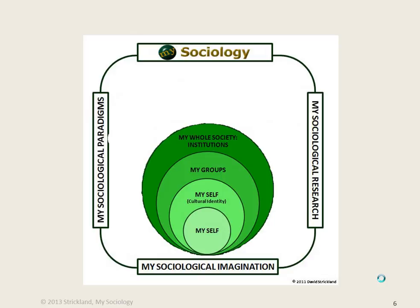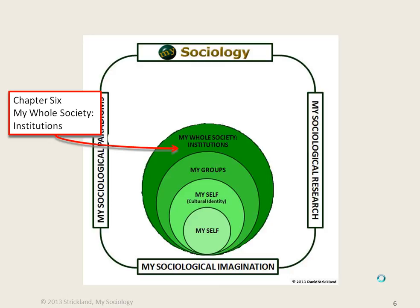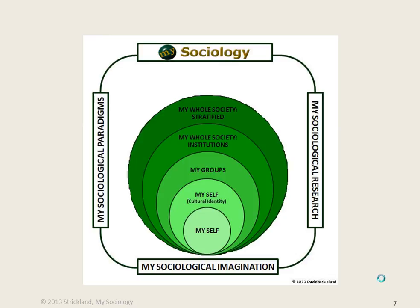Then, beginning with chapter 6, we give more emphasis to the macro level approach and look at institutions within society. We look at structural issues such as bureaucracy for institutions, and then use the family, religion, and education as examples of institutions in society. The paradigms and sociological research are used to examine those institutions.